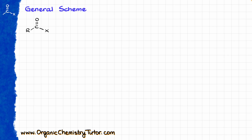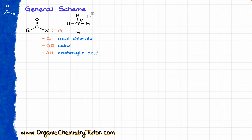Here I have the generic formula for some sort of a carboxylic acid derivative where X is going to be my leaving group. And if that leaving group is chlorine, that is going to be acid chloride. If it is the alkoxide, that is going to be an ester. And we can also have the carboxylic acid itself. Lithium aluminum hydride, which is essentially just a source of H⁻, is going to attack my carbonyl, and the electrons are going to be pushed onto the oxygen atom.